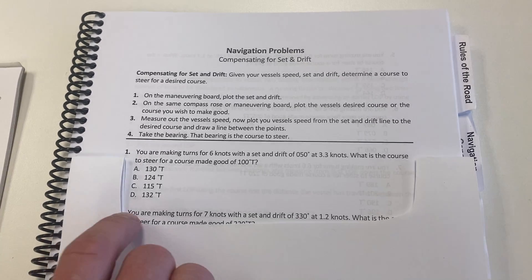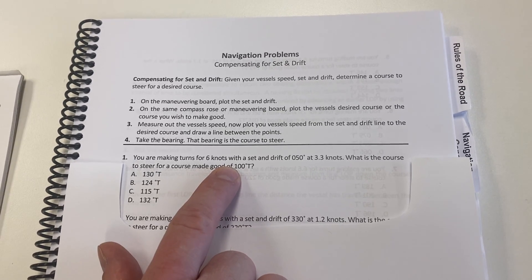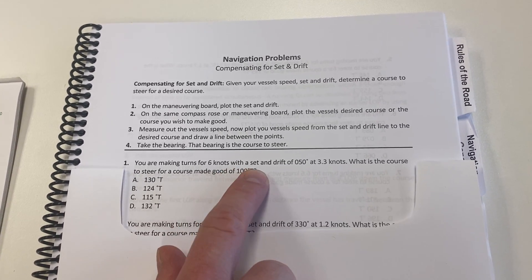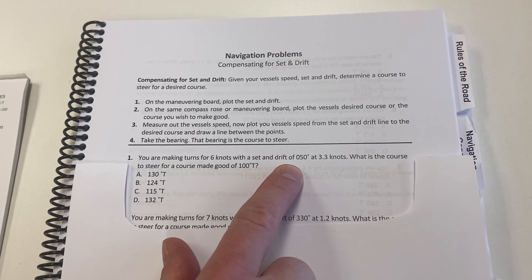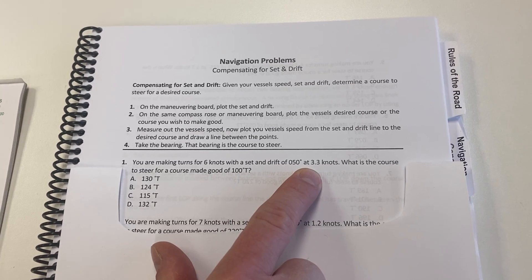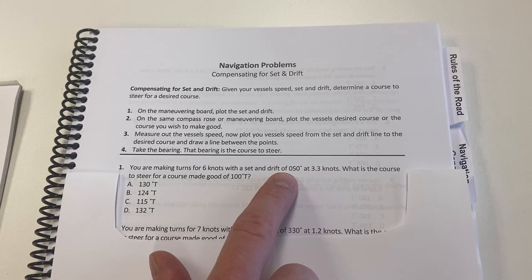It says we're making turns for six knots. We're going to hold on to that number for just a second. It says we have a set and drift of 050 at 3.3, so that's the first thing we want to plot is our set and our drift.